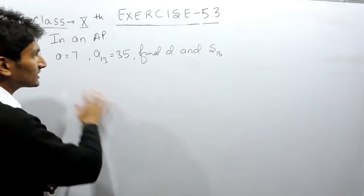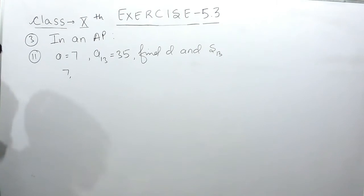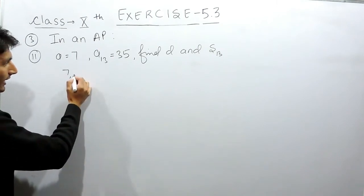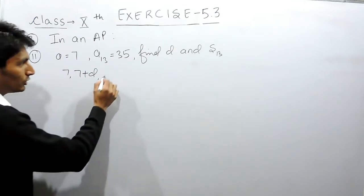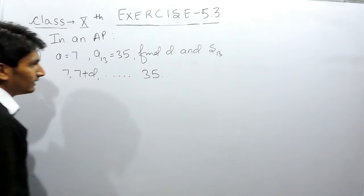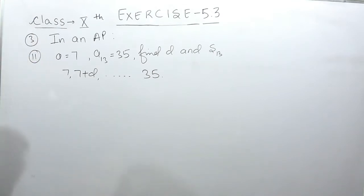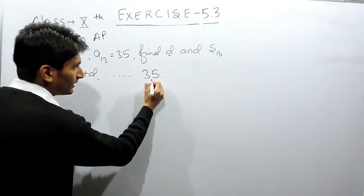So here there must be 7 as a first term, and we have to add a constant to this to make the second term and so on. This AP will be till 35. First of all, you have to find the value of common difference where the last term of this AP is given to you.